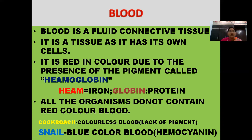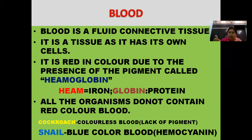What is the meaning of hemoglobin? Heme means iron and globin is a protein. Not all organisms have red color blood. We have red blood because of hemoglobin. Cockroach does not have any color in its blood — it has white or colorless blood because there is no pigment. When there is no pigment, there is no color. The snail has blue color blood because it has another pigment called hemocyanin.